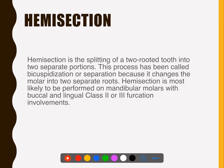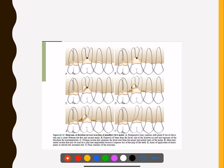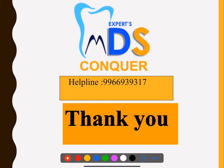Hemisection is different from root resection: it means splitting a two-rooted tooth into two separate portions, also called bicuspidization. One molar is cut into two parts and left for maintenance. These are not ideal treatments but are done when no other option exists and the patient understands the prognosis. Clinical images demonstrate how bicuspidization and hemisection are performed to treat a furcation defect.